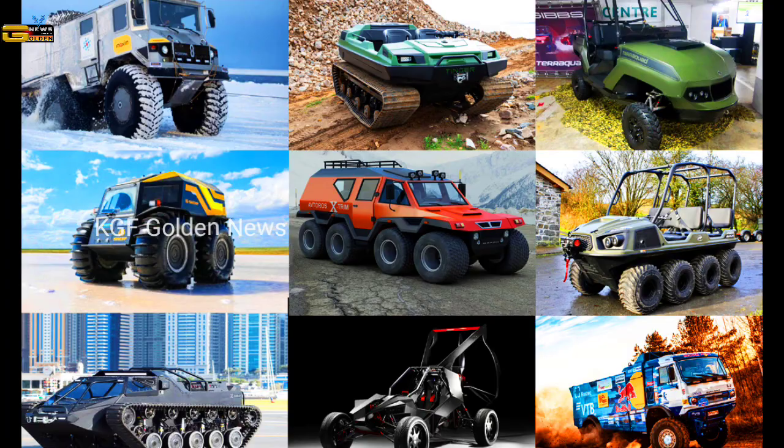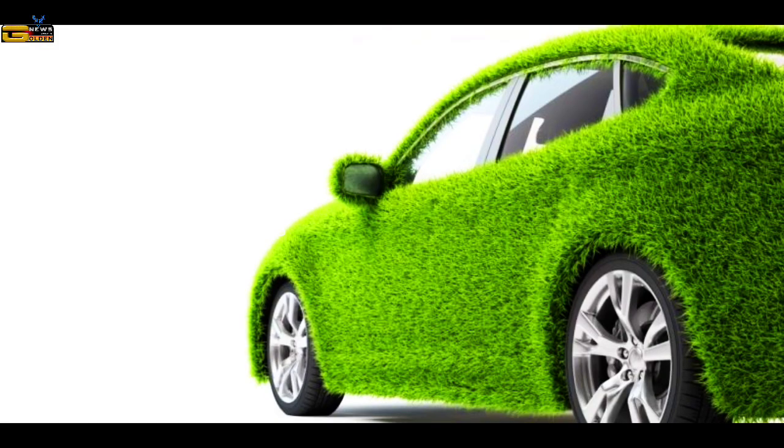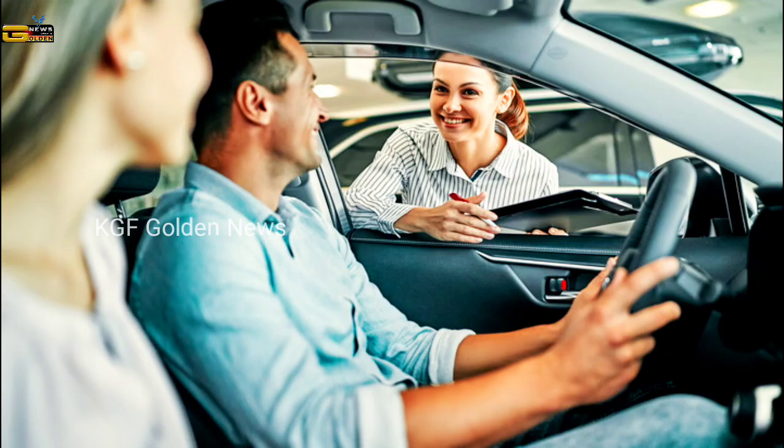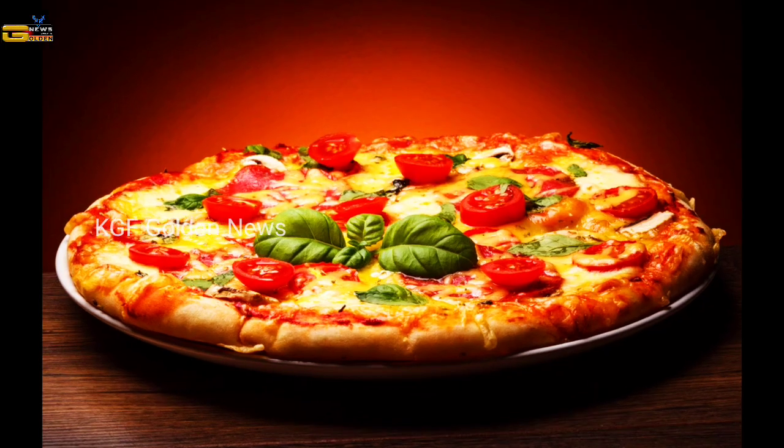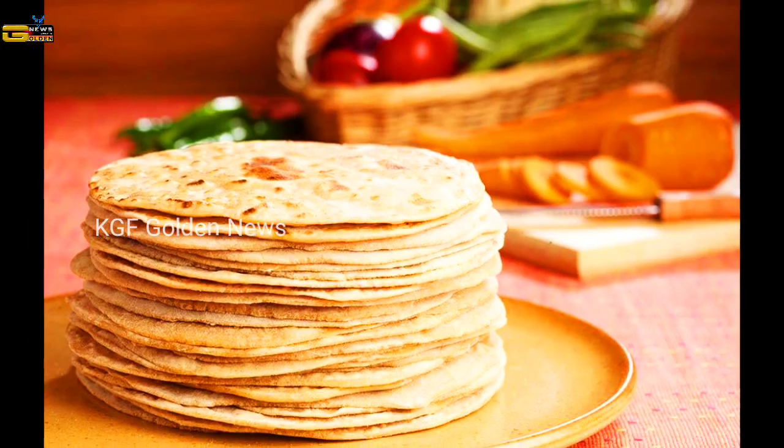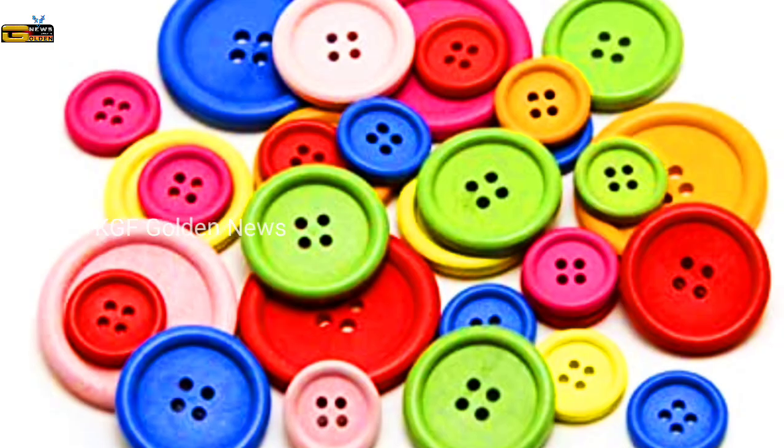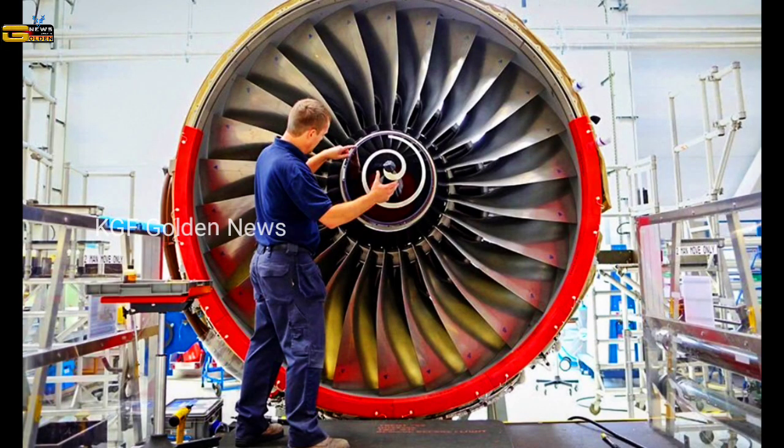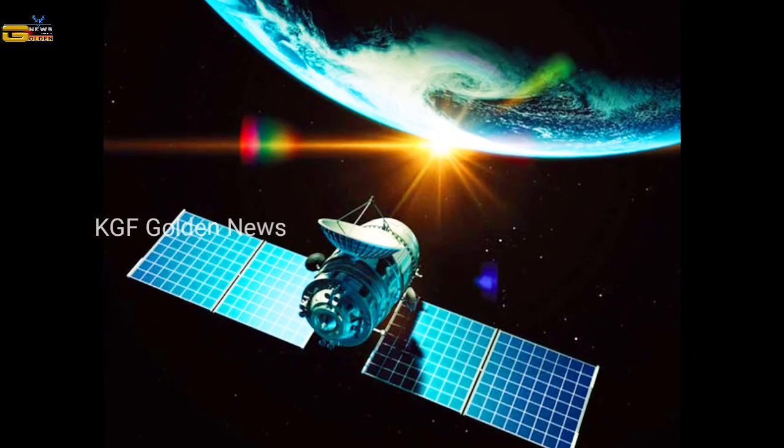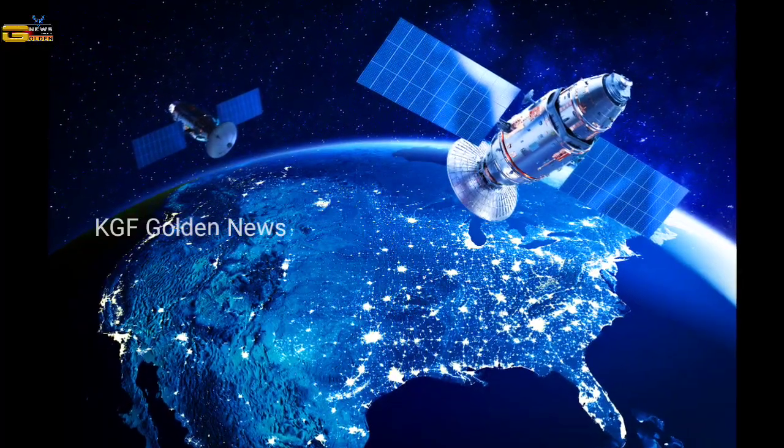Therefore, circles play an important role in our day-to-day life. We see tires of the vehicles, pizzas, chapatis, buttons, engines, crankshafts, even satellites orbit around the Earth in a circular orbit.